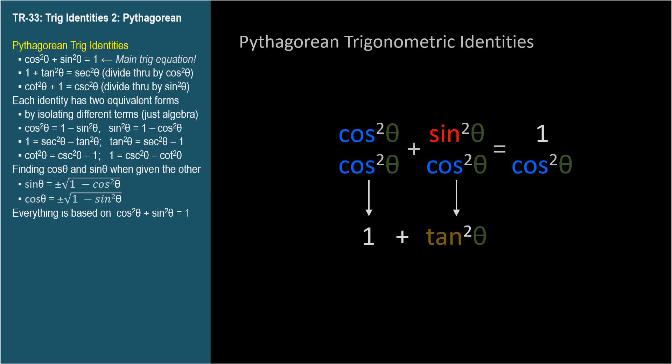On the other side of the equal sign, we now have 1 over cosine squared theta, which is secant squared theta. So 1 plus tangent squared theta equals secant squared theta is the second Pythagorean identity.